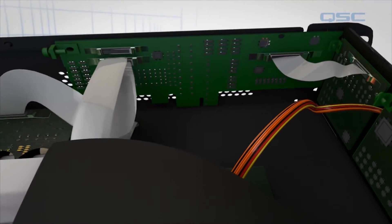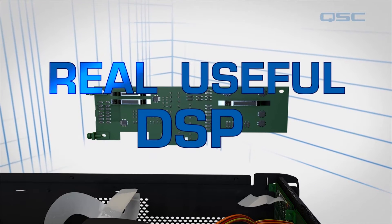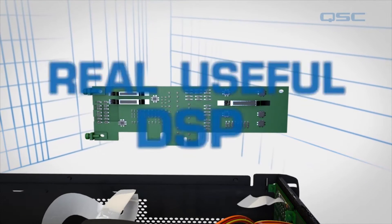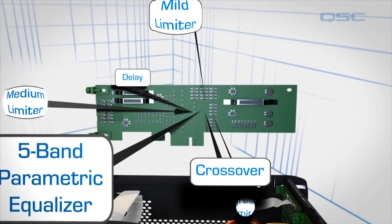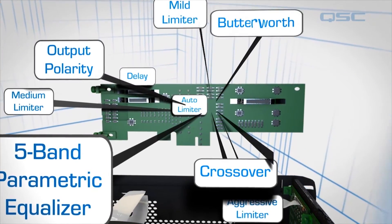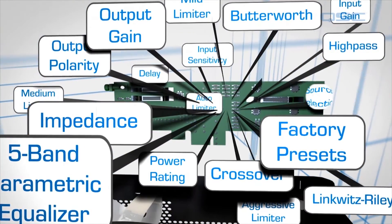The brain of the amplifier is this processor, which provides real useful DSP to the amplifier. It provides all of the essential processing like crossover, five band EQ, delay, peak limiters, and more. There's no need for an additional external device because all of these functions are built into the amplifier.